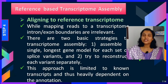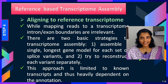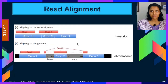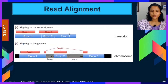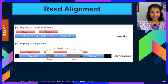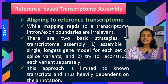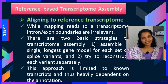Alternatively, you can align to a reference transcriptome, which contains no introns. This makes alignment much easier — read 1 aligns to exon 1, read 2 to exon 2, and portions spanning exon-exon split junctions are handled directly. When mapping reads to a transcriptome, intron-exon boundaries are irrelevant.